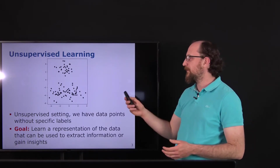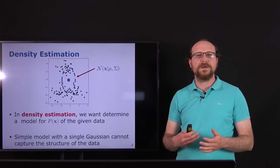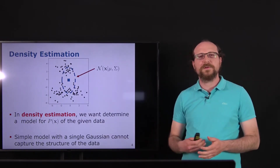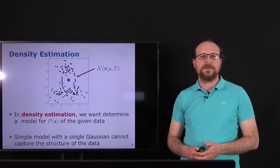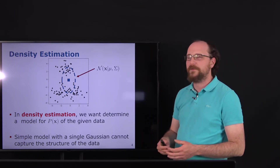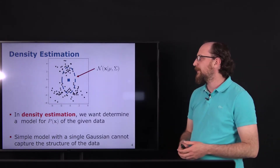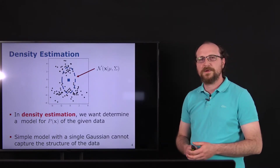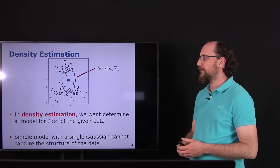Given a dataset, in density estimation we want to model the data. We aim at deriving a probabilistic model, for instance p(x), such that we can model the data — a parametric model that gives us a model of the data. Using this density estimation model we can then generate new examples or new points in the dataset. Here I showed a very simple model: the normal distribution fitted to the data via maximum likelihood estimate, which we covered in the Naive Bayes lecture.